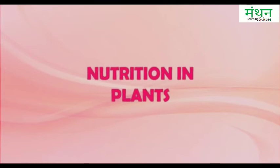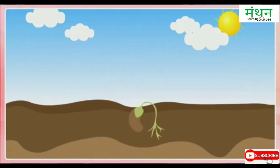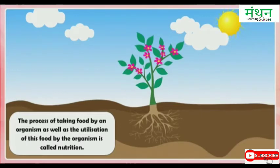Nutrition in plants. All living organisms require food to obtain energy, to obtain material for growth, and to obtain materials for the repair of damaged parts of the body. The process of taking food by an organism as well as the utilization of this food is called nutrition.